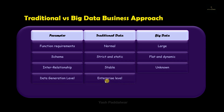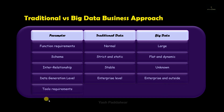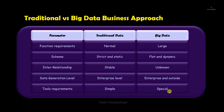For defining the interrelationship between entities in big data, a lot of processing has to be done. The next parameter is the data generation level — in the traditional business approach data is generated at enterprise level, while in big data it can be at enterprise level or more. For tools requirements, traditional approach needs simple and mostly inexpensive tools, but big data requires special and potentially expensive tools since large amounts of data must be processed in parallel across various formats.